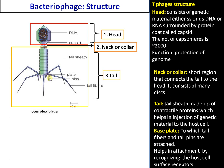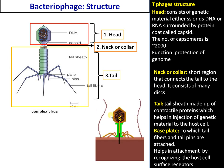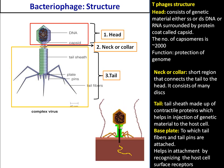At the bottom of the sheath there is a base plate, to which tail fibers or pins are attached. The function of the tail sheath is to inject the genetic material into the bacterium, whereas the tail fibers help in attachment of the bacteriophage to the bacterial surface.